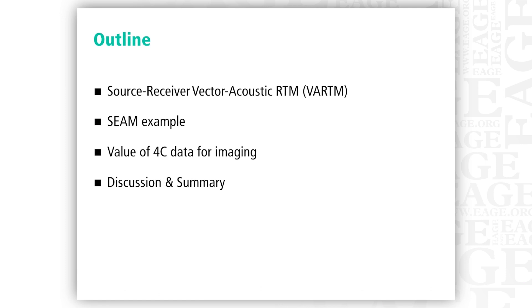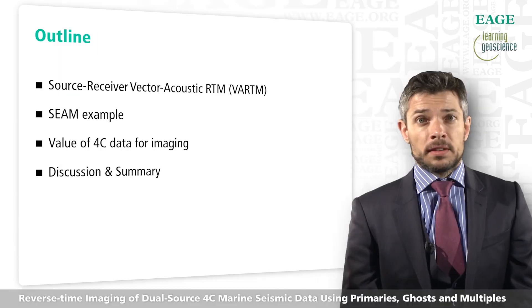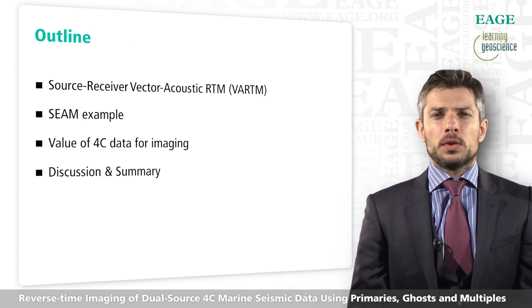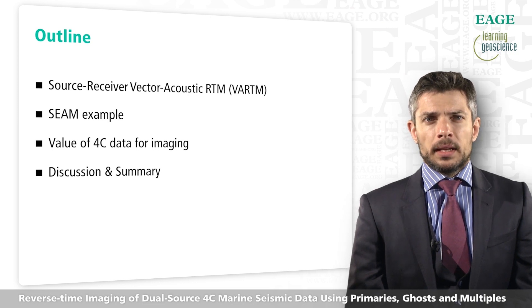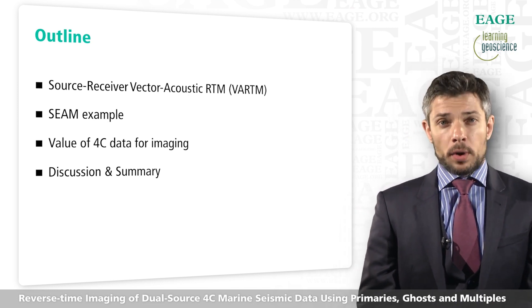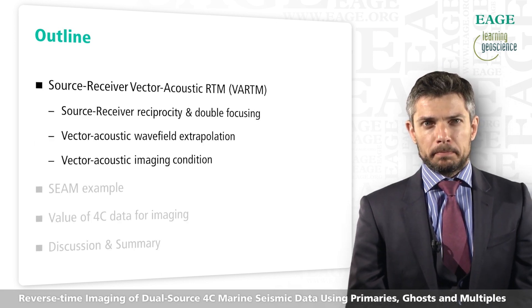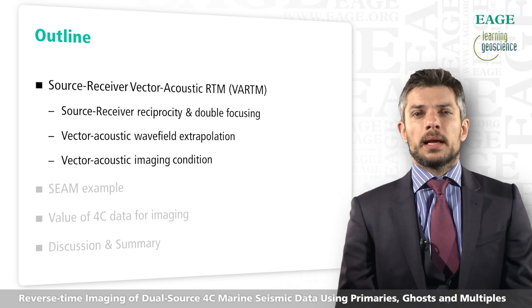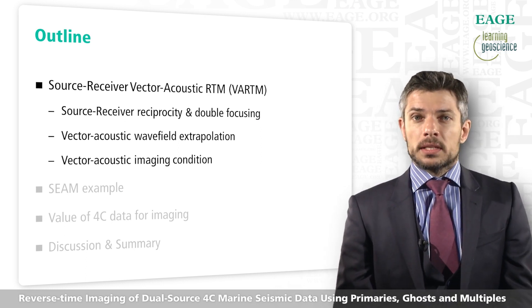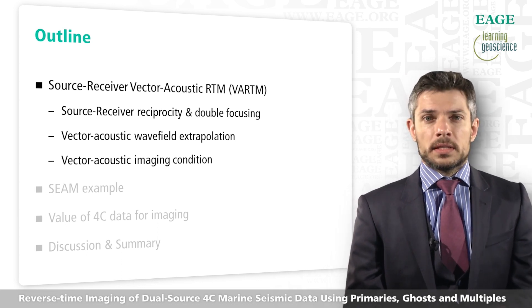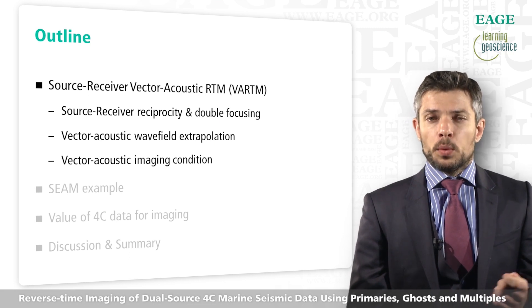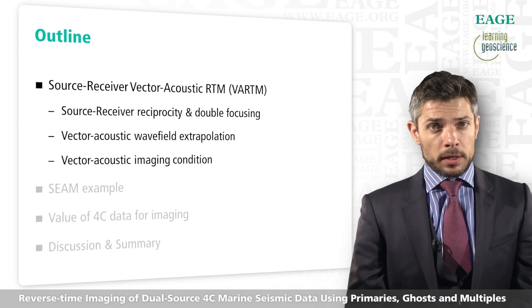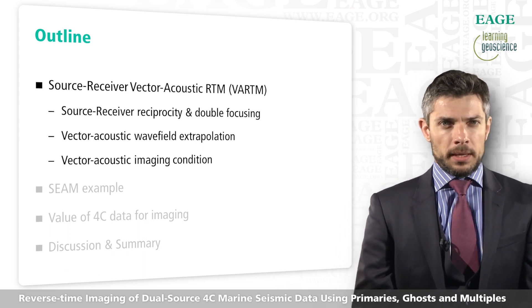Throughout this talk, we'll go through four main points: the method called source-receiver vector-acoustic RTM, or VARTM; a complex synthetic example using the SEAM model; the value of four-component data for imaging; and a summary of our findings. Beginning with the source-receiver vector-acoustic method, we'll cover the principles of source-receiver reciprocity from seismic interferometry and Green's theorems, and how these allow the phenomenon of double-focusing in imaging.